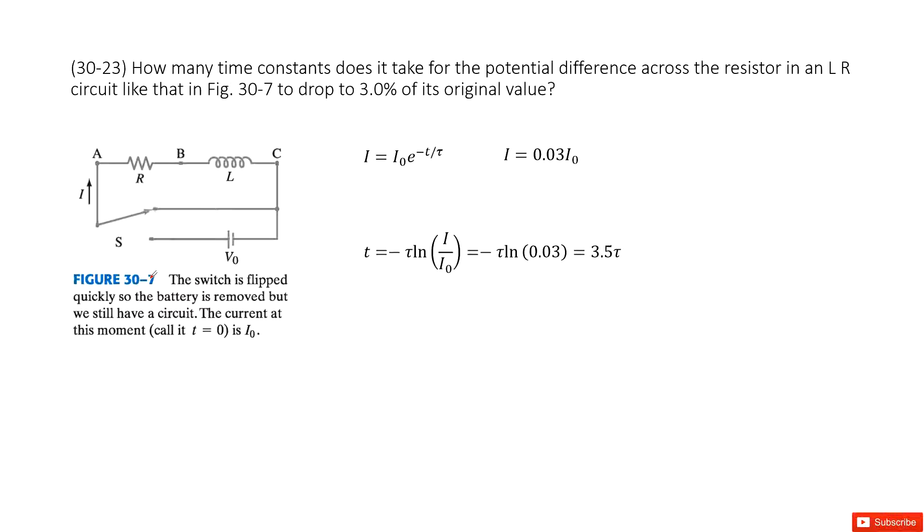you can easily get the current function as this one: I equal to I naught e power negative t over tau, right? So we can see the current just decreases with this term.